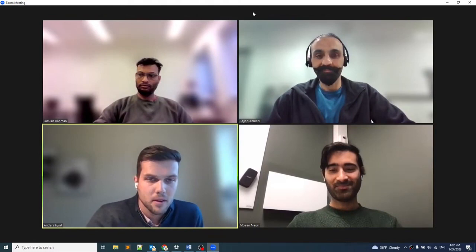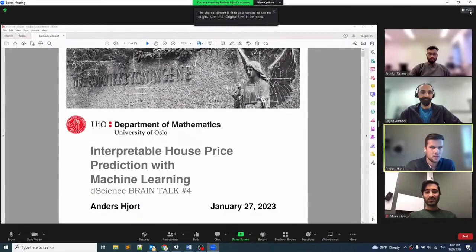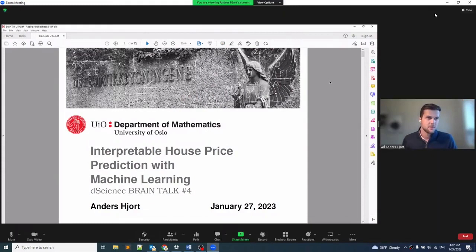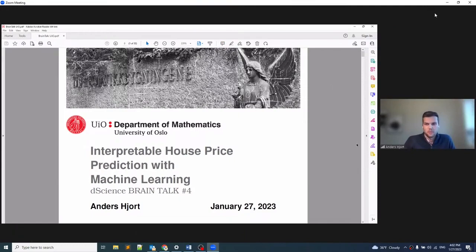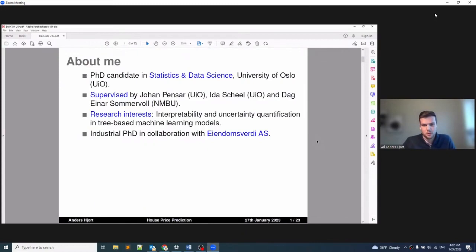The first presentation is given by Anders Yort. Anders is an industrial PhD at the Statistics and Data Science Group at University of Oslo. His PhD focuses on developing machine learning methods for house price prediction, in collaboration with Norwegian FinTech company Eiendomsverdi, a leading provider of data about the Norwegian housing market. Anders has a master's degree in physics and mathematics from NTNU. Hello Anders, the floor is yours.